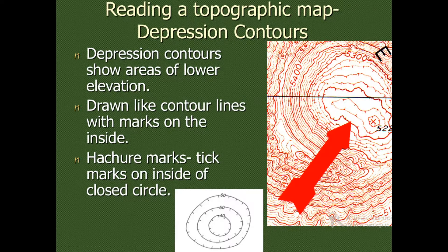If we want to locate depressions or water bodies or low-lying areas, then depression contours show areas of lower elevation drawn like contour lines with marks on the inside. HR marks, tick marks, are inside of the closed circle. So you will find that small marks will be drawn on the contour lines to indicate the depression.